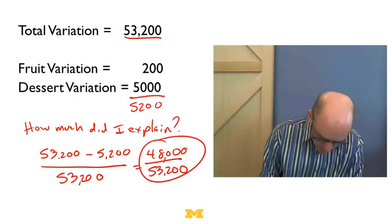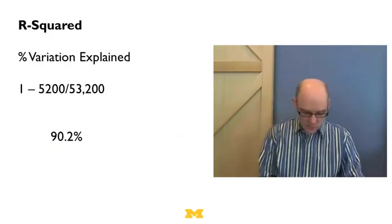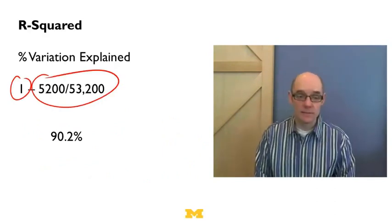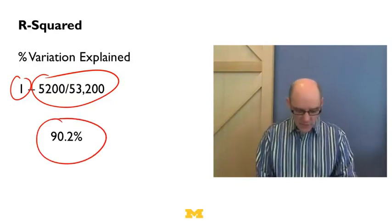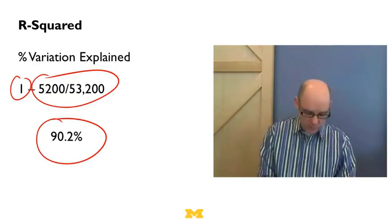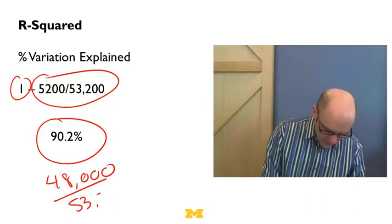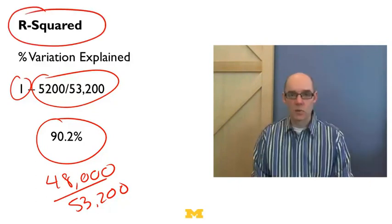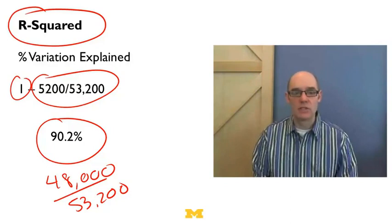So the percentage of the variation I explained was 48,000 divided by 53,200, which is a huge amount. Now I can write this more simply as just 1 minus the amount that's left over, 1 minus 5,200 over 53,200. And so I'm going to get that the amount of variation I explained was 90.2%. So that's how much of that variation I explained. This is equal to that 48,000 divided by 53,200. It's the amount of variation that I explained. Now formally, this is called the r squared. So this is the percentage of variation that I explained just by that simple categorization.